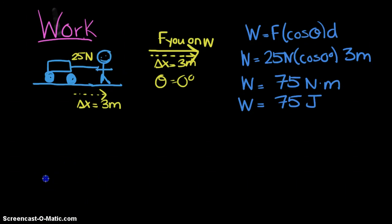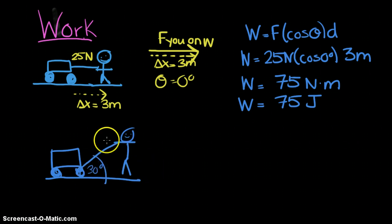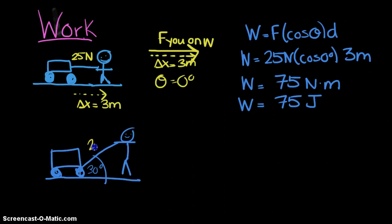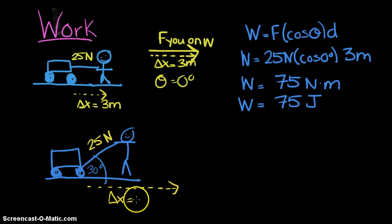For the second example, we have the same wagon but now you're pulling it at an angle of 30 degrees to the horizontal with a force of 25 Newtons, and this time you pull it a displacement of 4 meters to the right along the road.